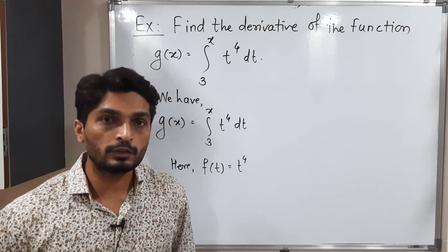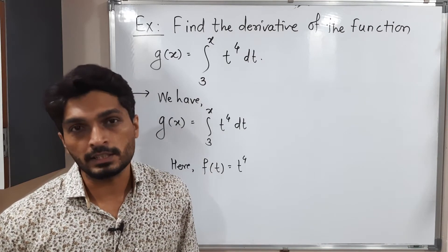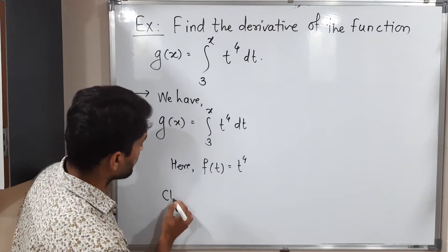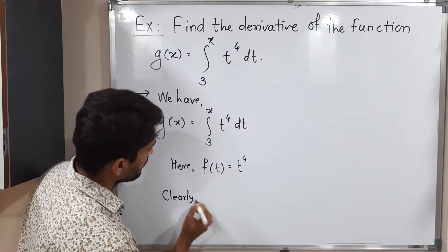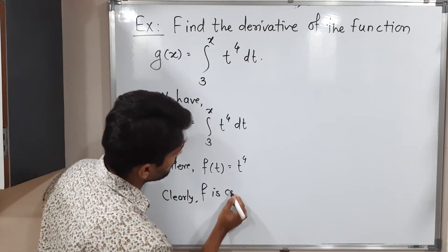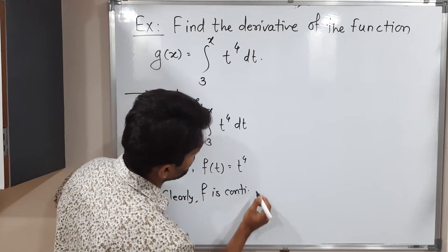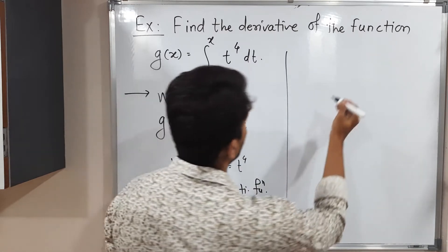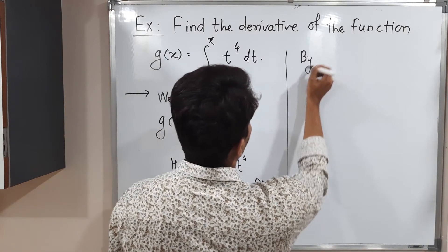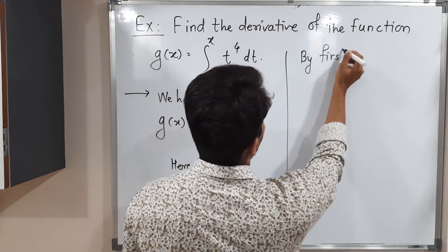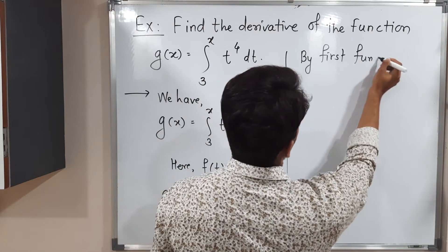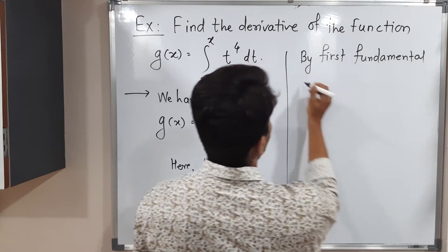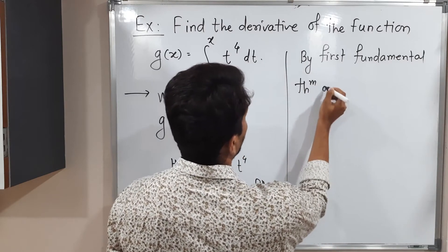t raised to 4 is a polynomial function, so obviously it is continuous on the given domain. Clearly f is a continuous function. Therefore we can apply the first fundamental theorem of calculus.